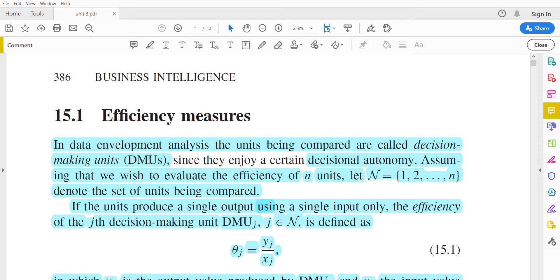These decision-making units provide a certain decisional autonomy for how to calculate efficiency measures using this DMU. First, we are assuming to evaluate the efficiency of n units. Let's take N equal to the set {1, 2, ..., n}.